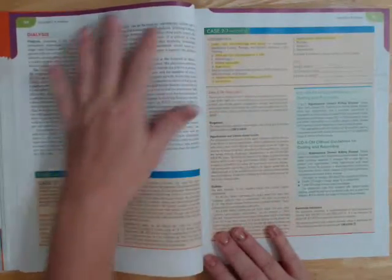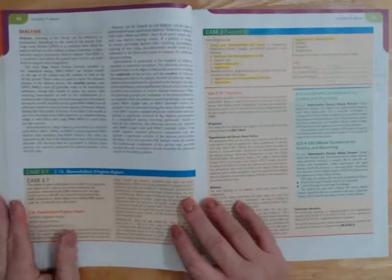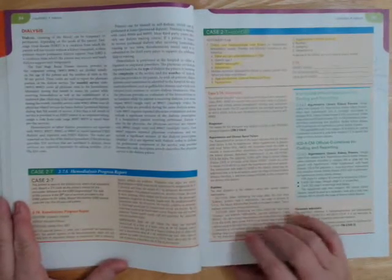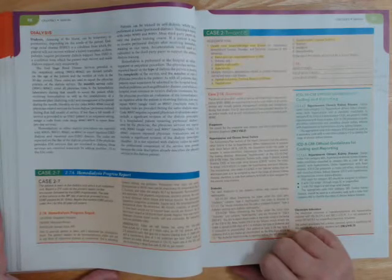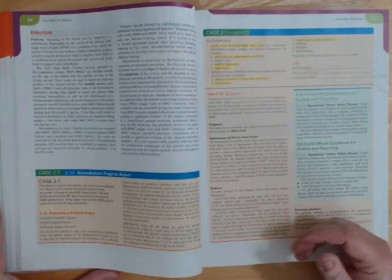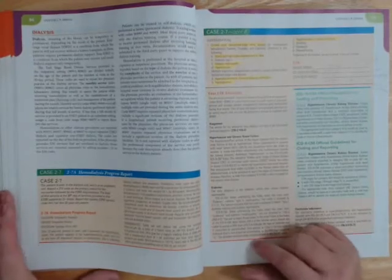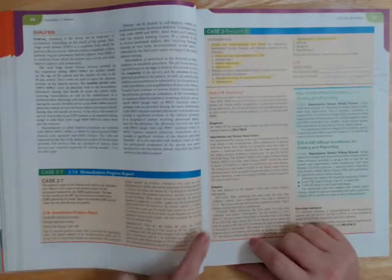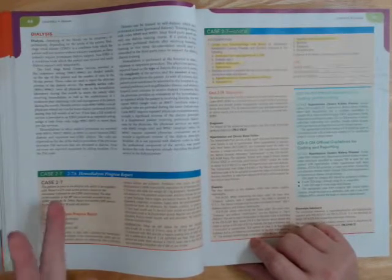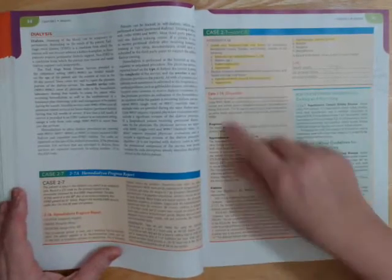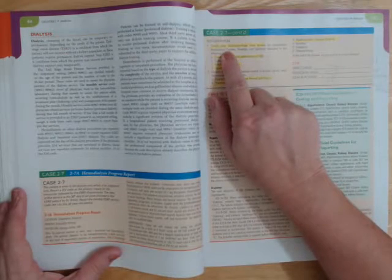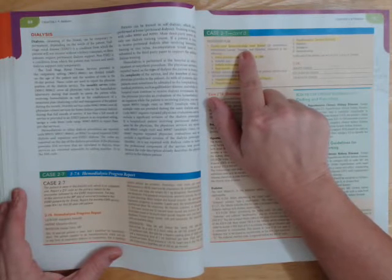Moving into dialysis. Remember dialysis is typically billed on a monthly basis with dialysis so many times a week for that month. This is a hemodialysis report. Remember you have two kinds of dialysis: peritoneal and hemo. This patient has chronic renal failure slash end-stage renal. I would always code it to the end stage.